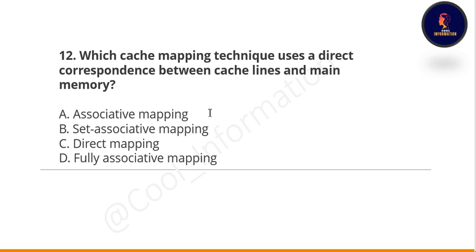Next question: which cache mapping technique uses a direct correspondence between cache lines and main memory? Options are associative mapping, set-associative mapping, direct mapping, or fully associative mapping. The correct option is C — direct mapping.